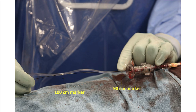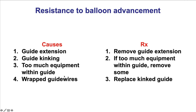Step number seven is to advance the balloon to the tip of the guide catheter. This can be assisted by markers placed at 90 and 100 centimeters from the balloon. If the guide is short — 90 centimeters, as often used in retrograde CTO interventions — then the 90 centimeter marker should be when fluoroscopy starts. For standard 100 centimeter guides, the 100 centimeter marker should be used. Resistance to advancing balloons can occur with guide extension, guide kinking, too much equipment in the guide, or multiple wrapped guide wires. Solutions include removing the guide extension, removing some equipment, or replacing a kinked guide with a new catheter.